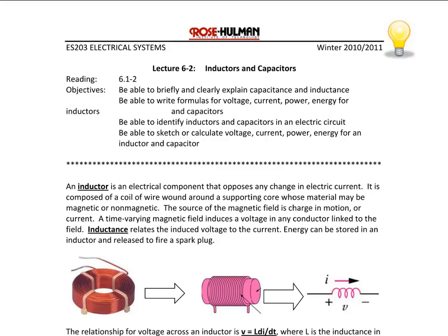An inductor is an electrical component that opposes any change in electric energy. It is composed of a coil of wire wound around a supporting core whose material may be magnetic or non-magnetic. The source of the magnetic field is charge in motion or current. This current flowing through the core creates a voltage, and this induced voltage is related to the current by the equation V equals L dI/dt.